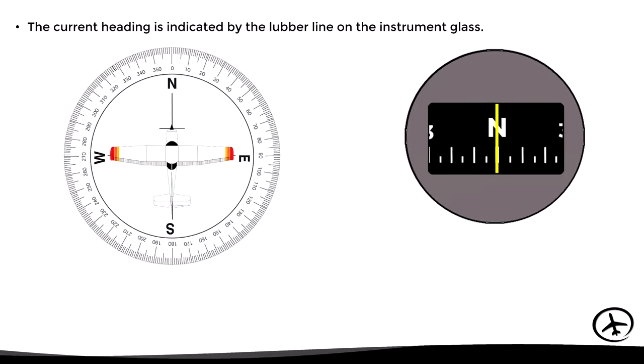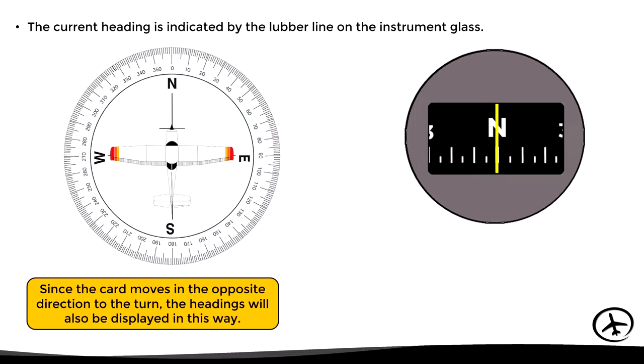As previously mentioned, since the compass card is inverted, the headings displayed on it are also inverted. So for example, heading 030 would not be to the right of north but to the left. In other words, the headings in the compass must be read from right to left.